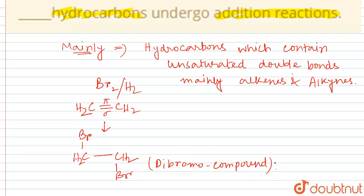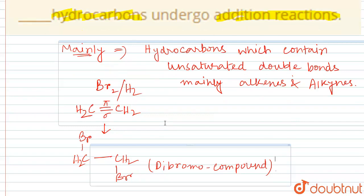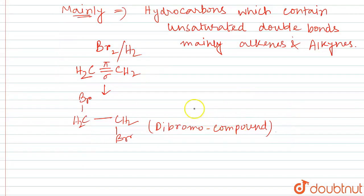So this type of unsaturated hydrocarbons, mainly the unsaturated hydrocarbons examples are alkenes or alkynes. Alkynes also have two pi bonds. HC triple bond CH, so these are alkynes.